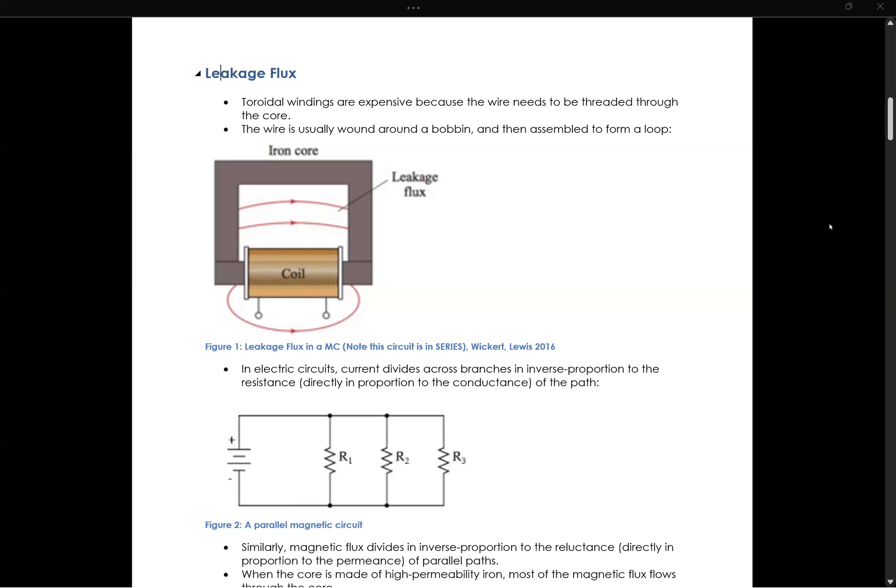We're going to talk about leakage flux in a magnetic circuit. The way a lot of magnetic circuits are put together is that we want it to be a toroidal shape or a square shape or something like that in order for our useful flux to be constrained within a shape.